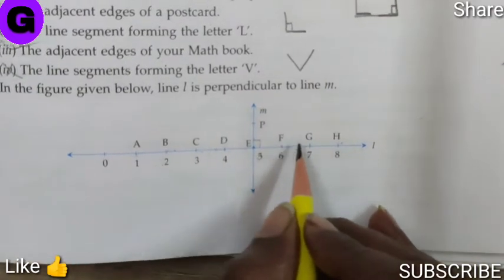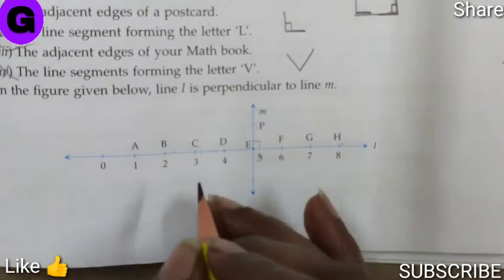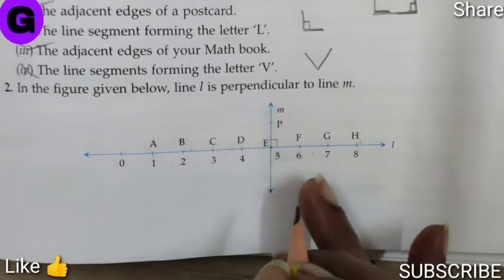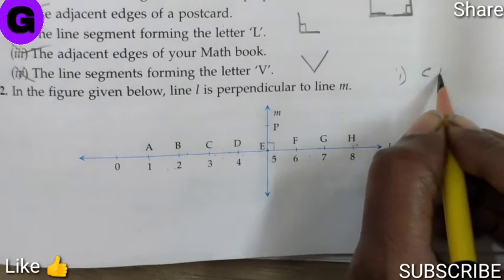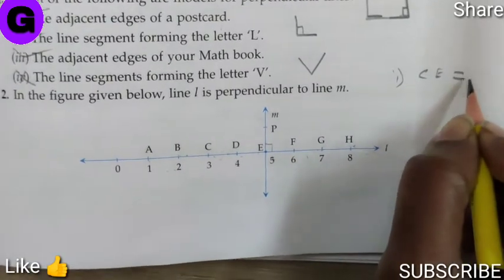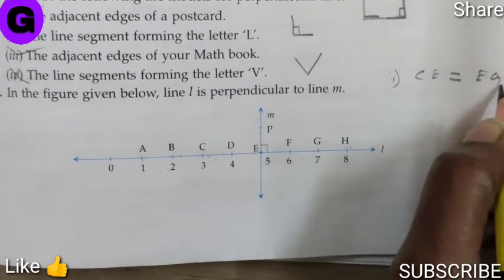1, 2. 1, 2. So yes, CE is equal to EG. Number 1: CE is equal to EG.